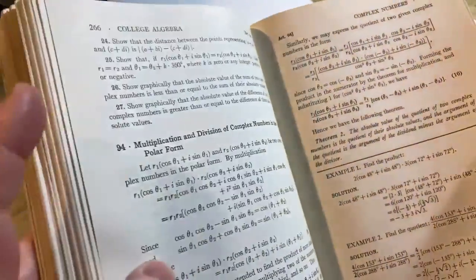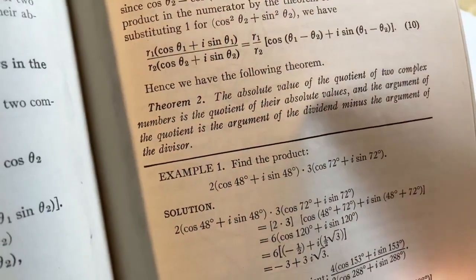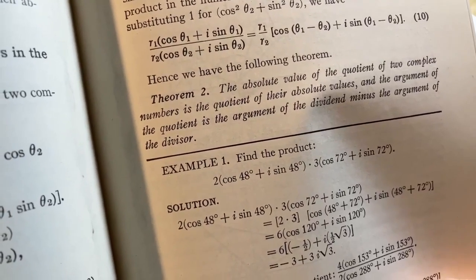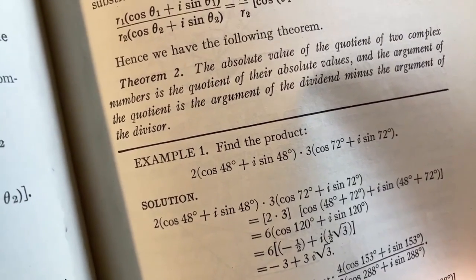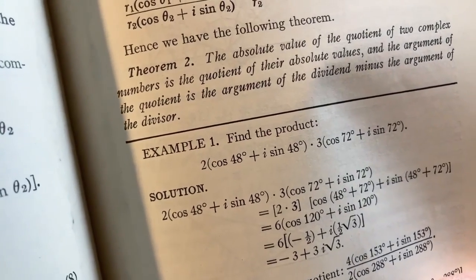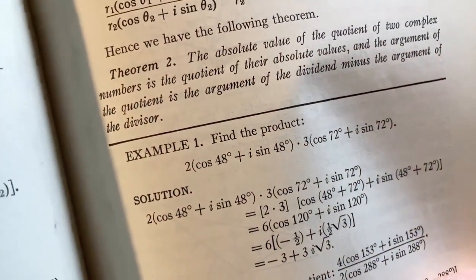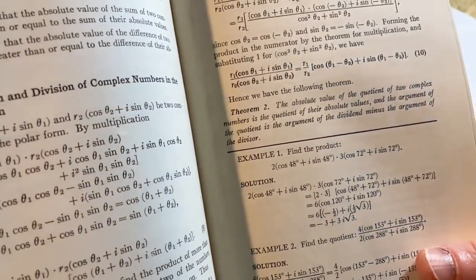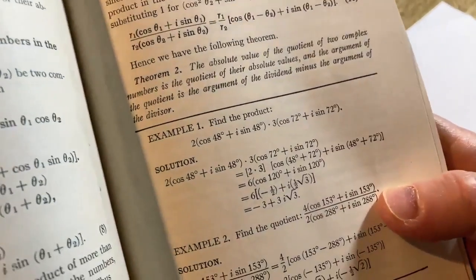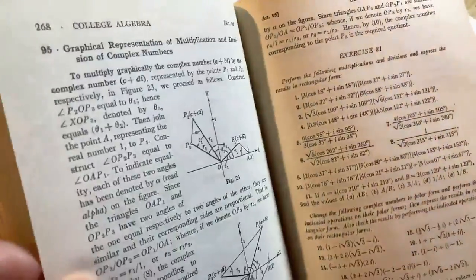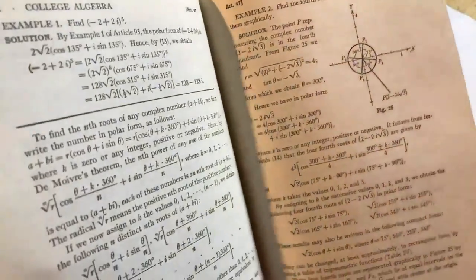Let's look at something else just to see what else is in here. Here's some trig. Find the product. Two times the cosine of 48 degrees plus i sine 48 times three. And then we have parentheses cosine 72 degrees plus i sine 72. So basically, we have two complex numbers in what's called polar form. And we're multiplying them. So you multiply the modulus. So two and three. It gives you six. And then you add the arguments. The arguments are called the angles. So that's something that is easy to prove. And this is an application of it. So this is something you do in a trigonometry class. That's cool that this has some actual trig. And there's some more here. Even though it says college algebra, it does have some trig. Pretty hardcore.